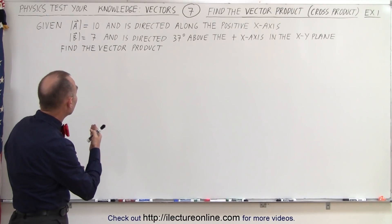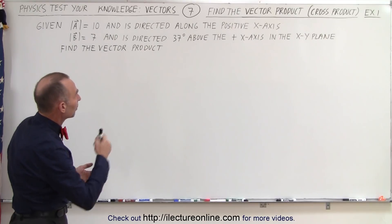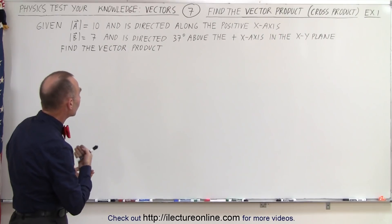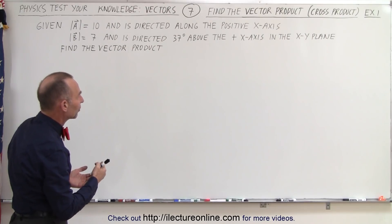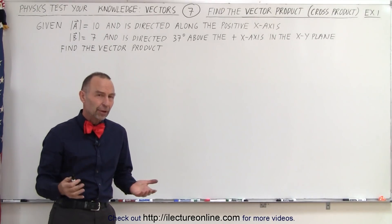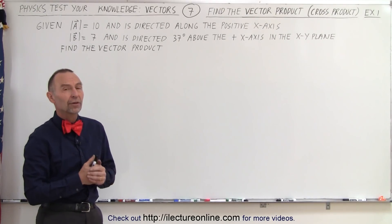We're given vector A with a magnitude of 10 directed along the positive x-axis, and vector B with a magnitude of 7 directed 37 degrees above the x-axis in the x-y plane. Now we're supposed to find the vector product, which is also known as the cross product.